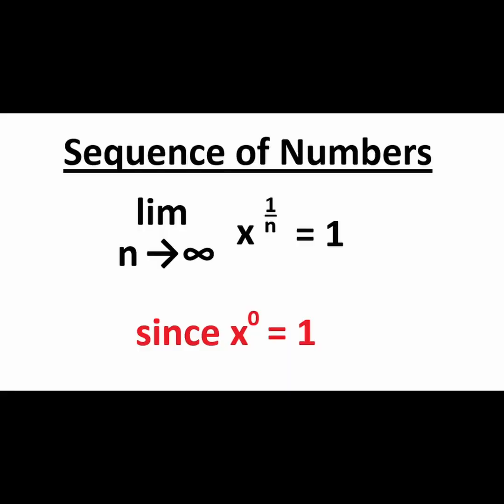Some limits of sequences of numbers are intuitive to us. For example, the sequence defined by x to the power of 1 divided by n for any value of x greater than zero goes to 1 as n goes to infinity. This makes sense since any number to the power of 0 is 1.